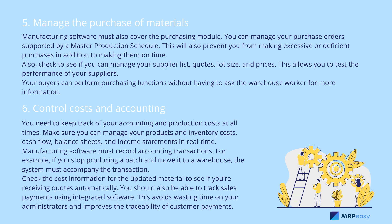Six: control costs and accounting. You need to keep track of your accounting and production costs at all times. Make sure you can manage your products and inventory costs, cash flow, balance sheets, and income statements in real time. Manufacturing software must record accounting transactions — for example, if you stop producing a batch and move it to a warehouse, the system must accompany the transaction. Check the cost information for updated materials to see if you are receiving quotes automatically. You should be able to track sales payments using integrated software, avoiding wasted time and improving the traceability of customer payments.